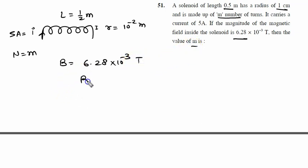We know that B is given by mu 0 n I inside the solenoid. So B equals 6.28 into 10 raised to power minus 3 equals mu 0, where mu 0 is 4 pi into 10 raised to power minus 7.